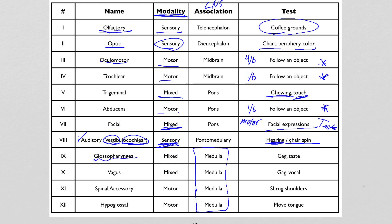Glossopharyngeal is a mixed nerve. On the sensory side, it's one of the taste nerves — it covers taste on the posterior one-third of the tongue, which you can test specifically by dropping something bitter on the back of the tongue and seeing if the person registers it. On the motor side, the muscles that create the gag reflex are innervated by a combination of glossopharyngeal and vagus. The vagus also connects to the vocal cords, so expect speech problems and difficulty changing pitch if the vagus is damaged.